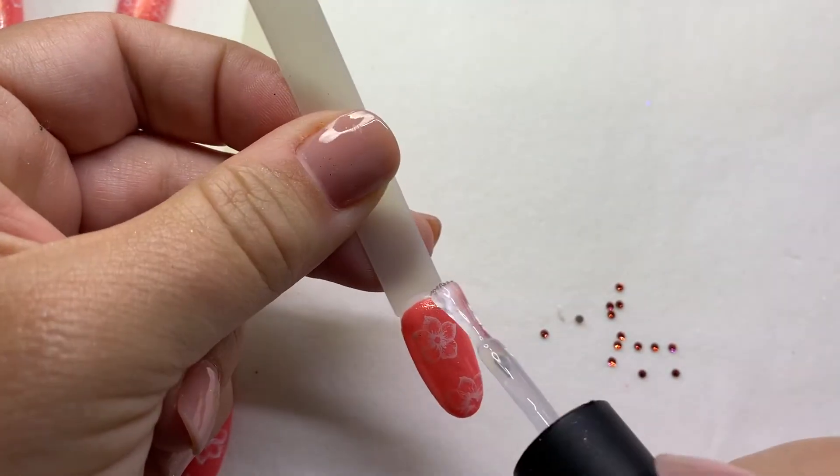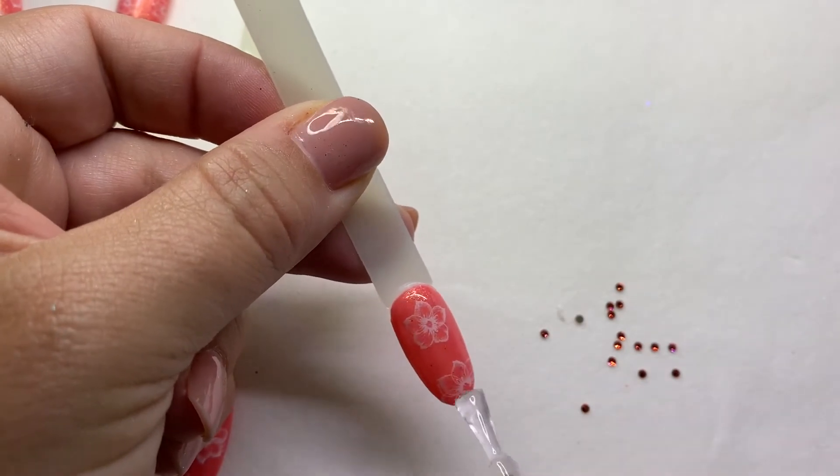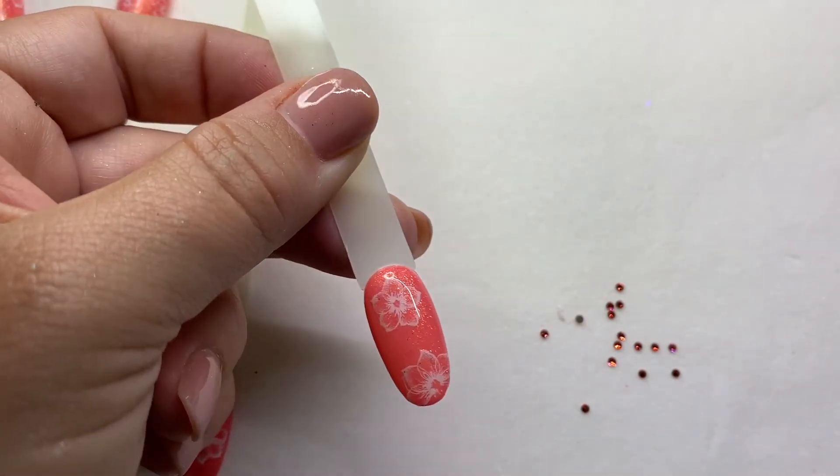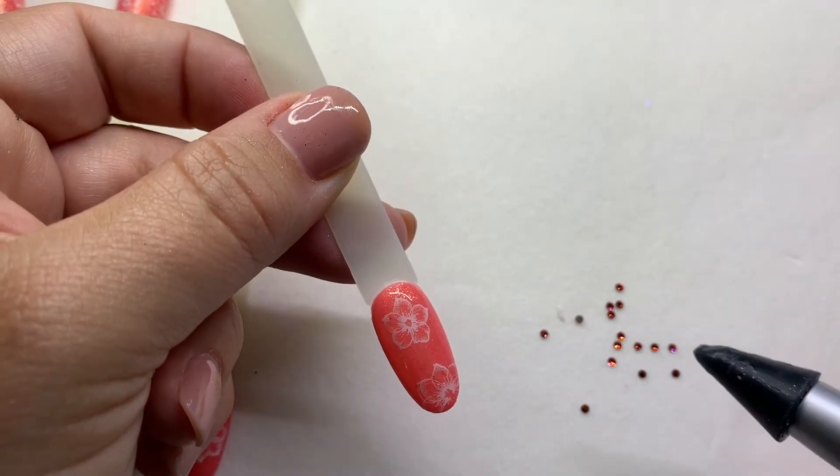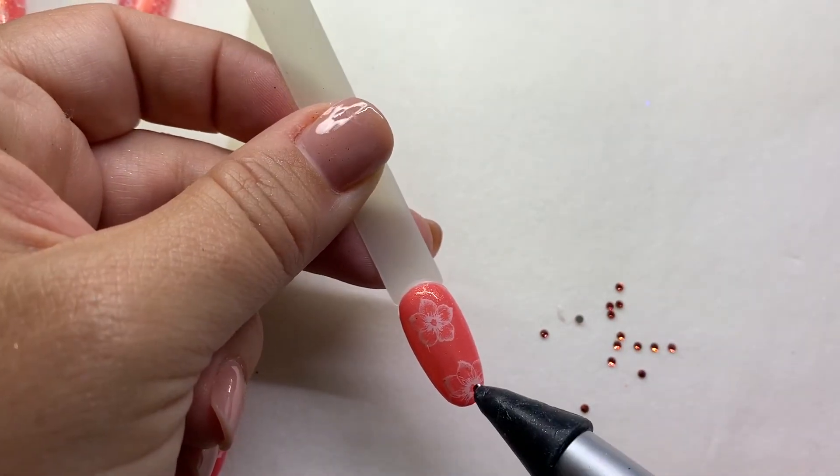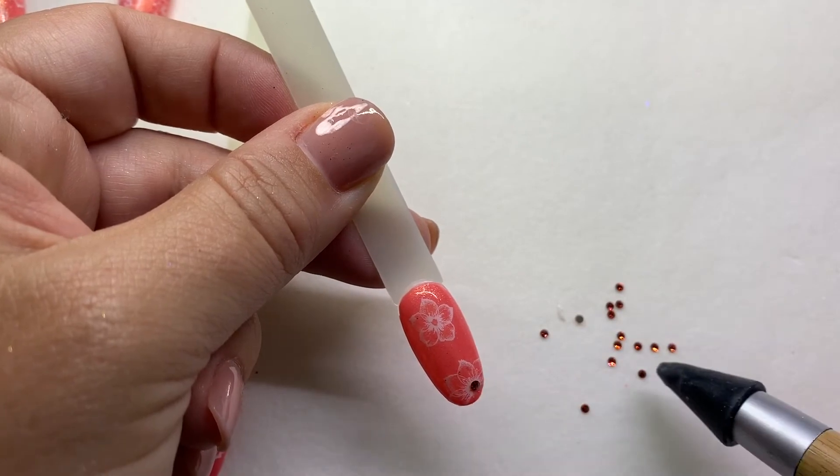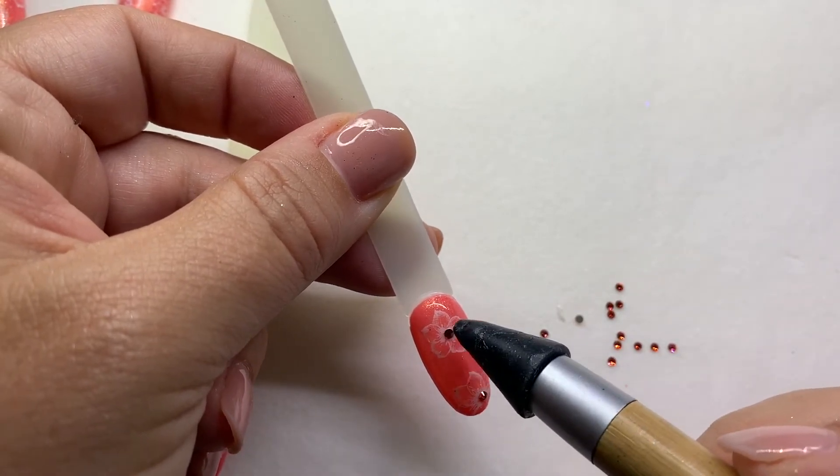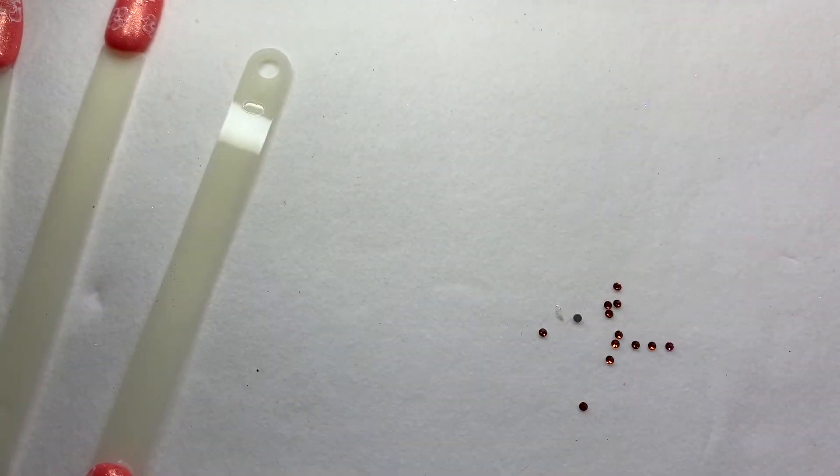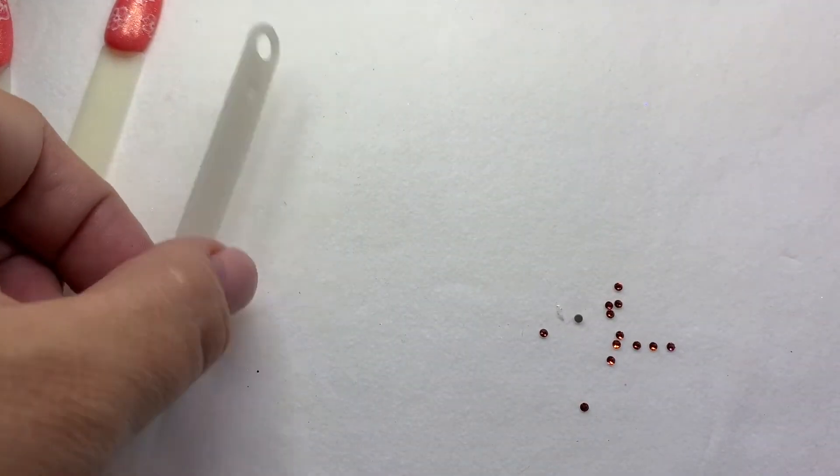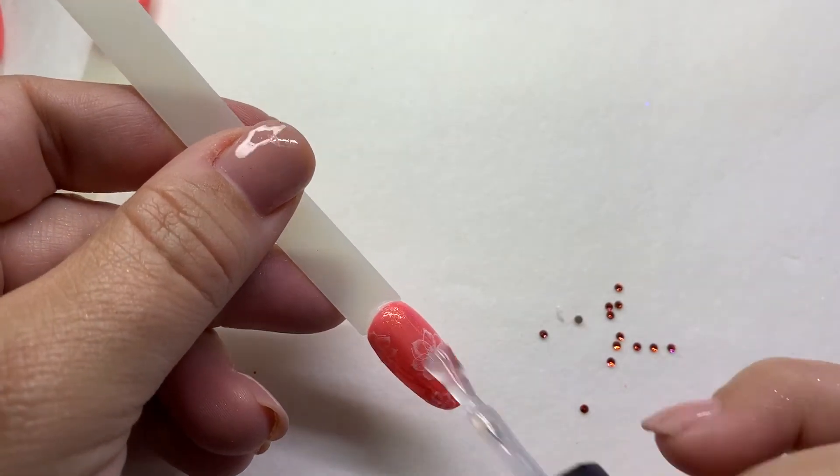So now we're going to take a nice healthy bit of Outshine. Number one, because you want to protect the decals, and number two, we're putting these stones in there so you need a lot of Outshine. We're just going to plop these right in because it's such a small stone. The gel is going to come up around the edges and give it a nice setting.